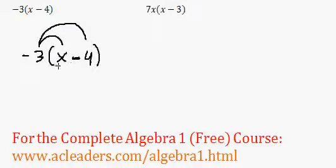In this case, we only have two terms inside the parenthesis, the x and the negative 4 or the minus 4. We're going to multiply negative 3 by x, getting negative 3x. And we're also going to multiply negative 3 by the negative 4.